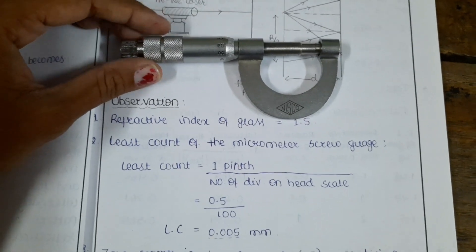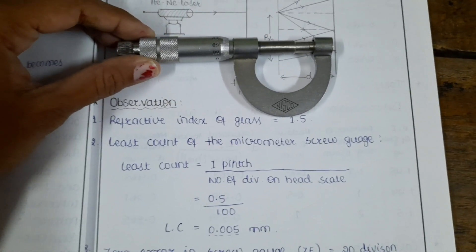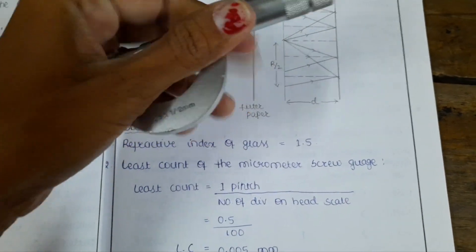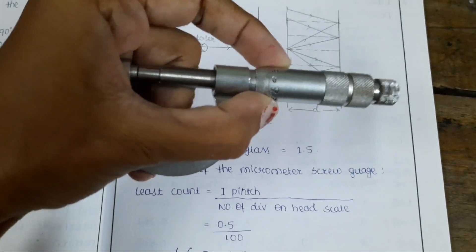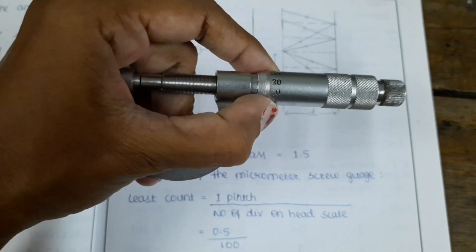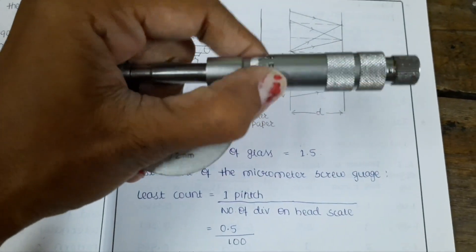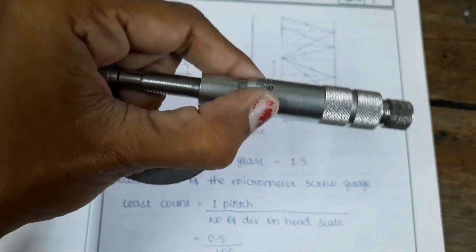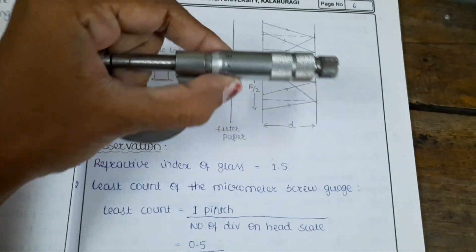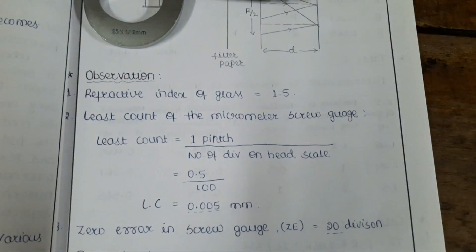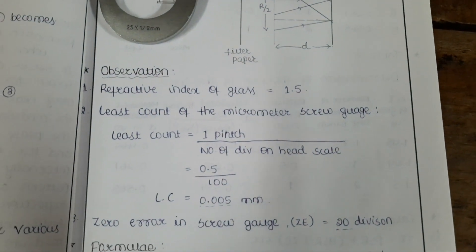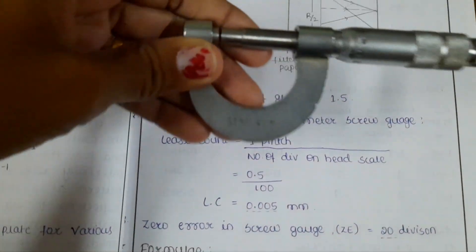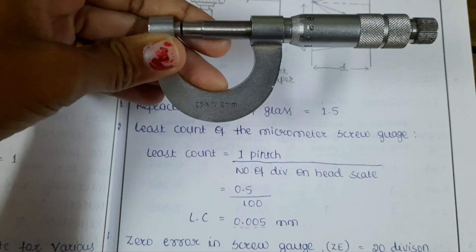The least count is equal to 1 pitch divided by number of divisions on head scale. Here there are 100 divisions on the head scale. The pitch scale value is 0.1, so the least count is 0.005 millimeter.